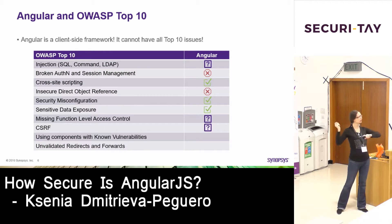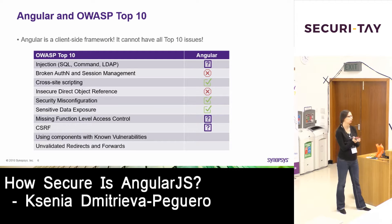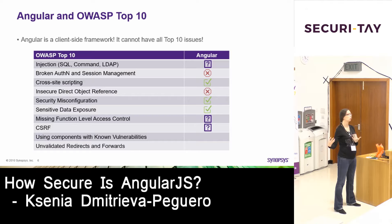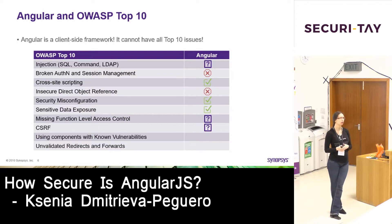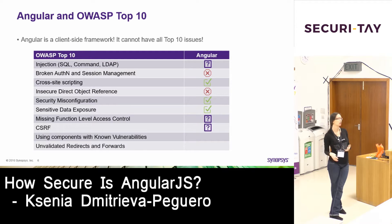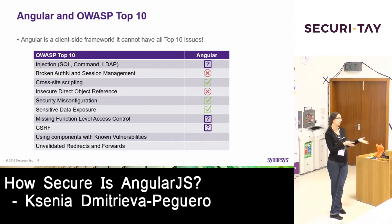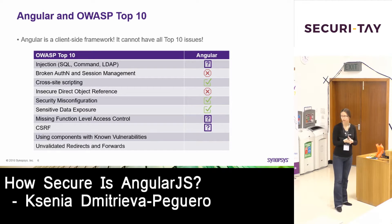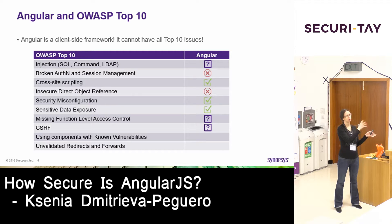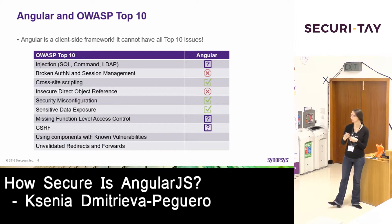CSRF — cross-site request forgery — another vulnerability where you can trick a user into submitting a request they didn't want to submit. For example, I log into my Facebook, somebody sends me an email saying 'look at this video of funny cats,' I click the link, and when I go back to Facebook something got posted under my account, or my picture got updated. If it was a banking site, you can do much more harm. Angular actually provides some protection from CSRF, which should be used in confluence with server-side implementation — you should also check that on the server side.